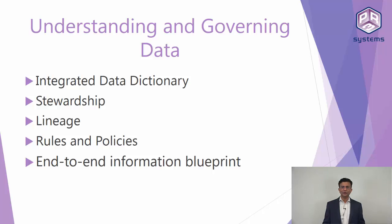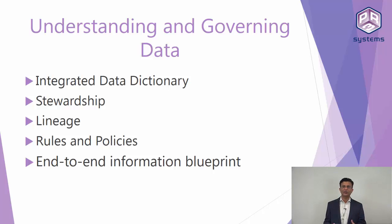When using Information Governance Catalog it allows you to get an end-to-end information blueprint: what is my source, what is my target, what happened in the middle, and who is responsible for which piece of information. When you combine all of these together, you get the right technology which can help you achieve the right governance practice for your organization.